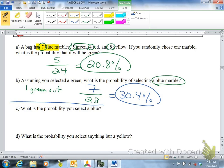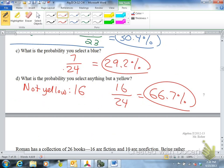So on the next question, everything's reset, still talking about the same bag of marbles. What's the probability that you select a blue? And then letter D, what's the probability you select anything but a yellow? So see if you could answer those two questions. Okay, so those are some basic probability questions.